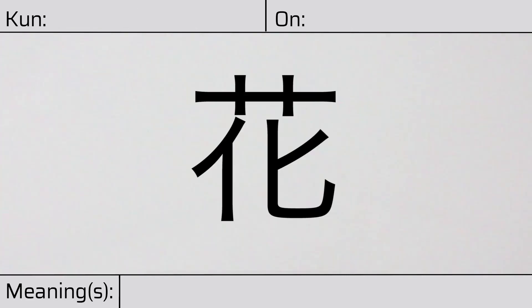Welcome to this lesson on Japanese Kanji. Today, we'll be discussing this character. This Kanji has a kunyomi or Japanese reading of hana. And it has onyomi or Chinese readings of ka or ke. This character has the meaning flower.